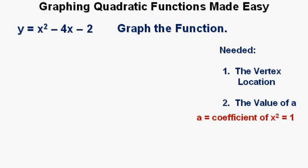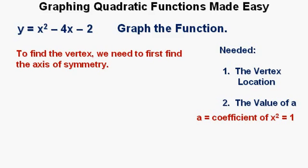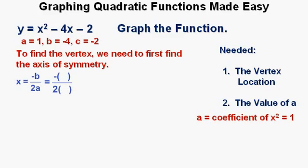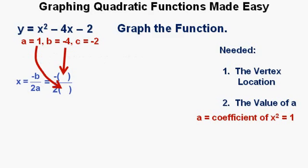To find the vertex from a function in standard form, we first need to find the axis of symmetry. The formula for the axis of symmetry is x equals negative b over 2a. To use this formula, we need the values of a and b: a equals 1, b equals negative 4, and c equals negative 2. Plugging in negative 4 for b and 1 for a, this simplifies to 2. So x equals 2 is our axis of symmetry.